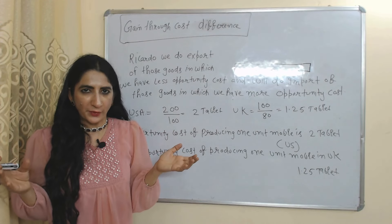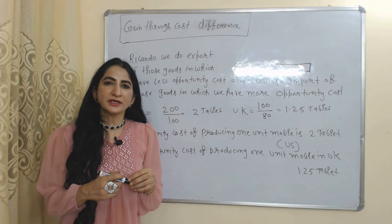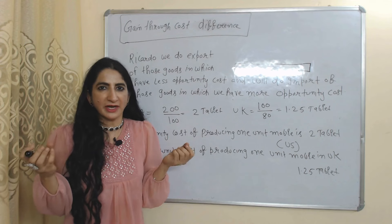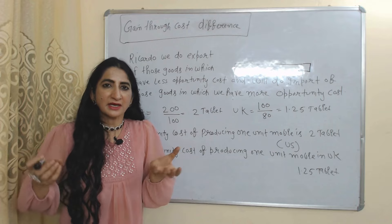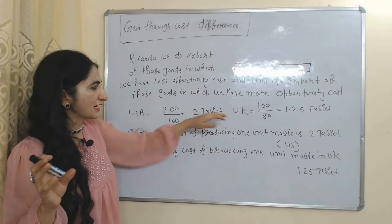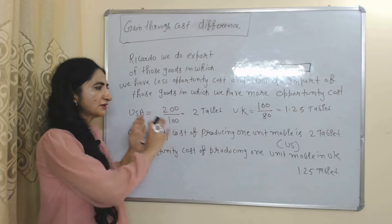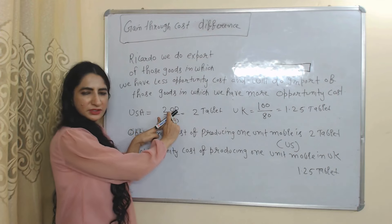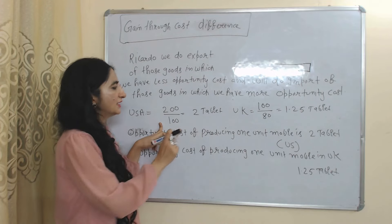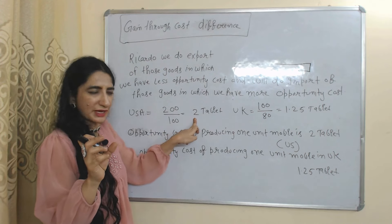Now we will see gain through cost differences. According to Ricardo, countries should increase production and export of those goods in which they have less opportunity cost, but reduce production and increase import of those goods in which they have higher opportunity cost. Because of these cost differences, countries will receive gain through international trade. We have two countries, USA and UK, both producing two goods: mobile and tablet. In USA, either 200 units of tablet or 100 units of mobile can be produced — 200 divided by 100 equals 2 — so opportunity cost of producing one mobile in USA is a loss of 2 tablets.